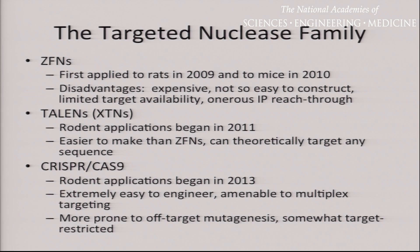Then, CRISPR-Cas9. Rodent applications came online and were first published in 2013. They're extremely easy to engineer and amenable to multiplex targeting. They're potentially more prone to off-target mutagenesis and somewhat more target-restricted than TALENs, but nonetheless they came on board and everybody jumped onto the system.